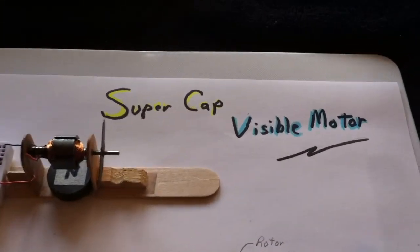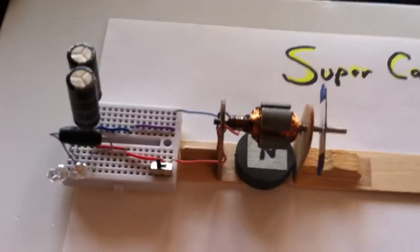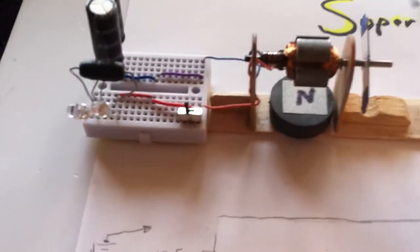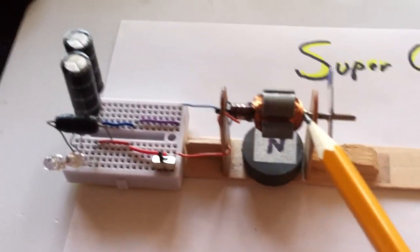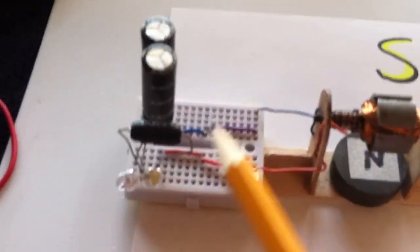This is what I'm going to call the super cap visible motor. I've taken the rotor out of a 12-volt DC motor and mounted it on this little structure, and I have a little circuit board prototype board.